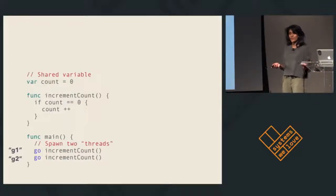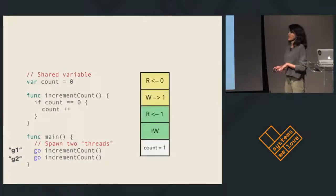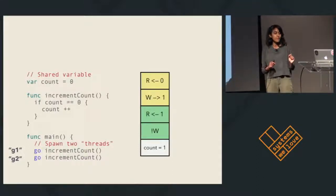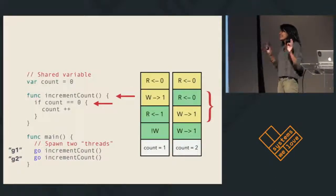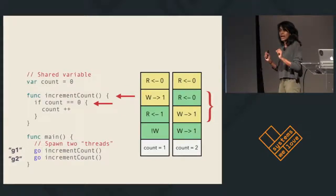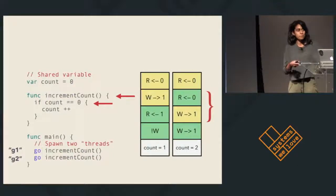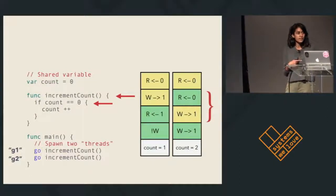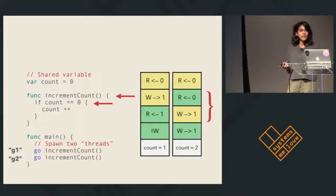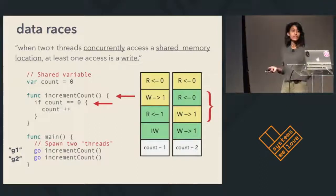How many takers for a final value of count being one? It can actually be one. If G1 fully executes before G2, we would get a final value of one. However, if G1's write and G2's read happen at the same time — whatever that means — the final value of count is two. The point of this program is to establish that the final value of count depends on the ordering of events, which is determined at runtime. This comes down to two threads accessing a shared memory location, and this is what is called a data race.